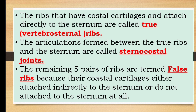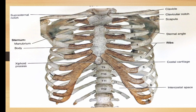The remaining five pairs of ribs are termed false ribs because their costal cartilages either attach indirectly to the sternum or do not attach to the sternum at all. The 8th, 9th, and 10th pairs of ribs attach indirectly and are called vertebrochondral ribs. The term 'chondral' relates to the anatomical term chondron, referring to cartilage and chondrocytes. Their cartilage is attached to the 7th pair of ribs.